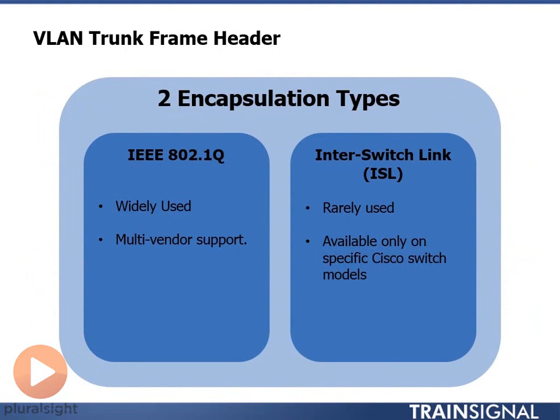That's not the only method we have to encapsulate frames over a trunk. We have .1q, which is widely used, has multi-vendor support, and is very well supported in industry. As a network engineer, you'll need to know how to do .1q frame tagging or set up a .1q trunk port. The other type is inter-switch link, or ISL. This is very rarely used and only available on specific Cisco switch models — it's a Cisco proprietary VLAN tag, not compatible with non-Cisco devices.